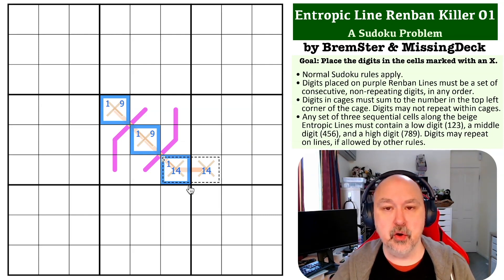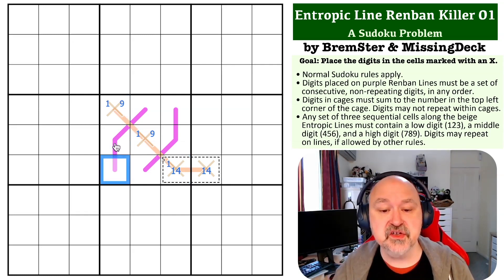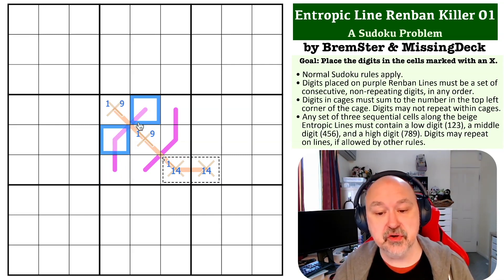But now I've used the low and the high digit on the entropic line. So I can't use 2, 8, 7, or 3 on the entropic line. So when I put 2 onto a Renban line, and I can't use 1, it must go 2, 3, 4.